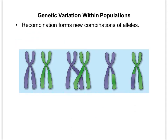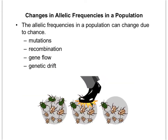Recombination happens in prophase I of meiosis through a process called crossing over. We end up with recombinant DNA — the new chromosomes produced are essentially shuffled versions of our parents' DNA that we can then pass on to our offspring. Both mutations and recombination are very random events that can change allele frequency in a population. Next we'll look at gene flow and genetic drift.